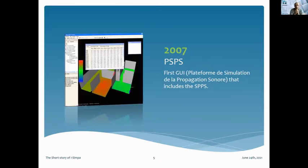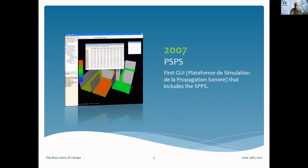Later, we decided to develop a specific interface to host all the numerical codes we developed in our laboratory. SPPS was only one particular code, but we also had many computational codes for room acoustics and outdoor sound propagation. The problem was that it was difficult to compare both numerical codes because it was difficult to manage all the input data and results. So we decided to create a specific interface that could host all the numerical codes, manage the same input data, and compute acoustic indicators. This was called PSPS — the French acronym for Plateforme Simulation la Propagation Sonore — and was the first version of I-Simpa.